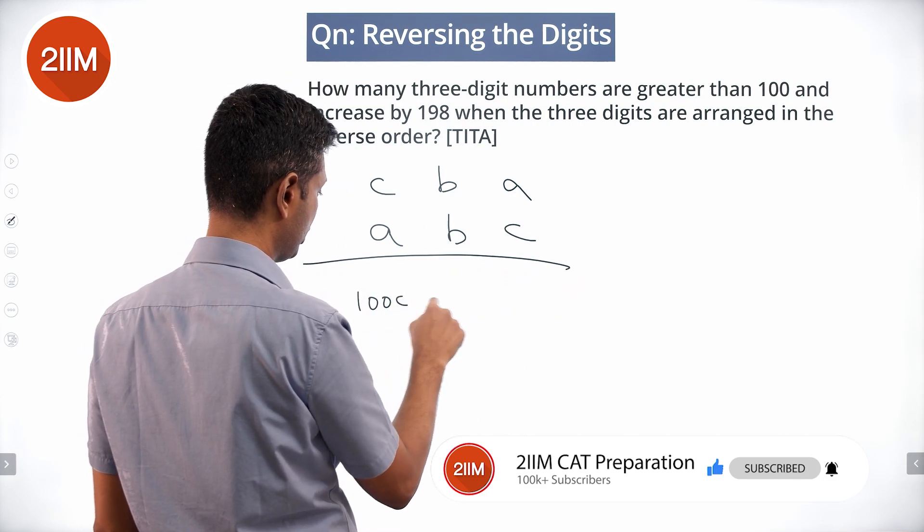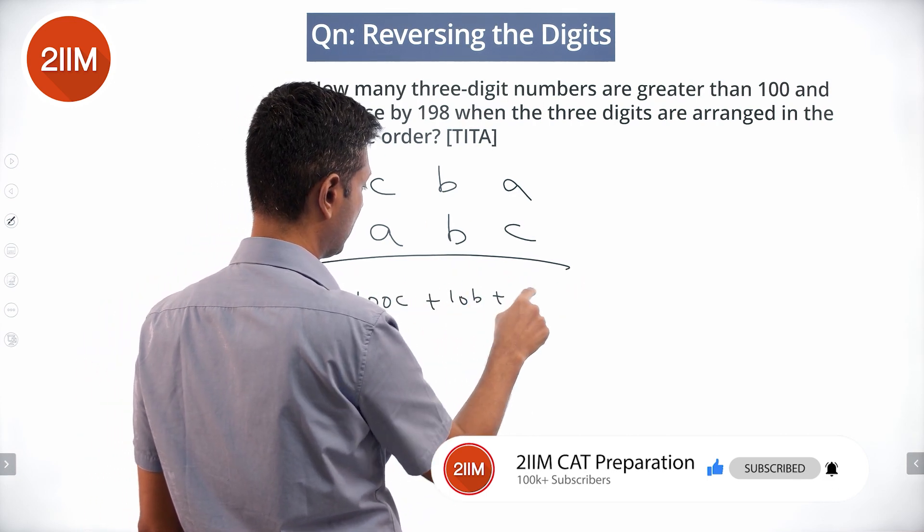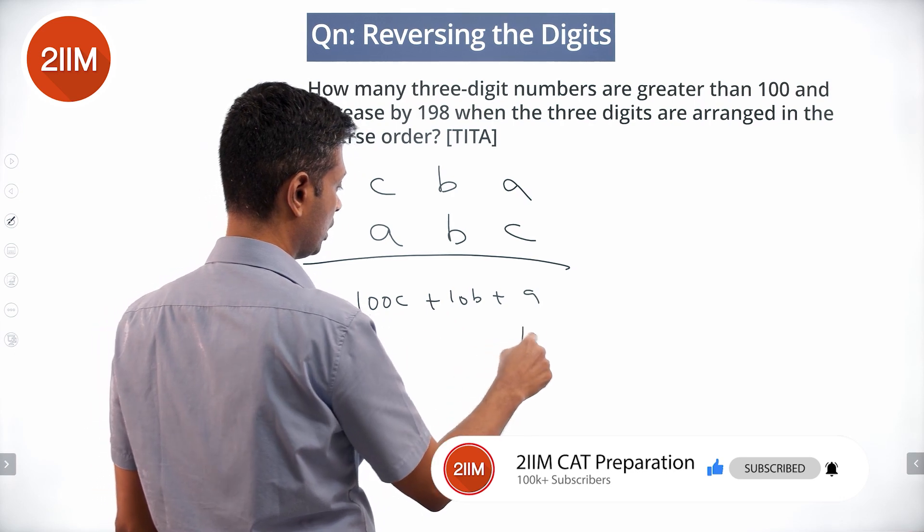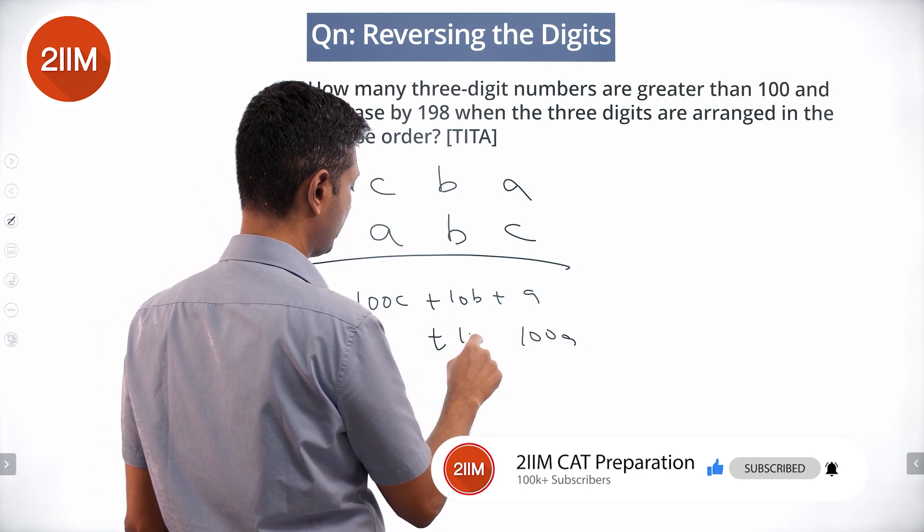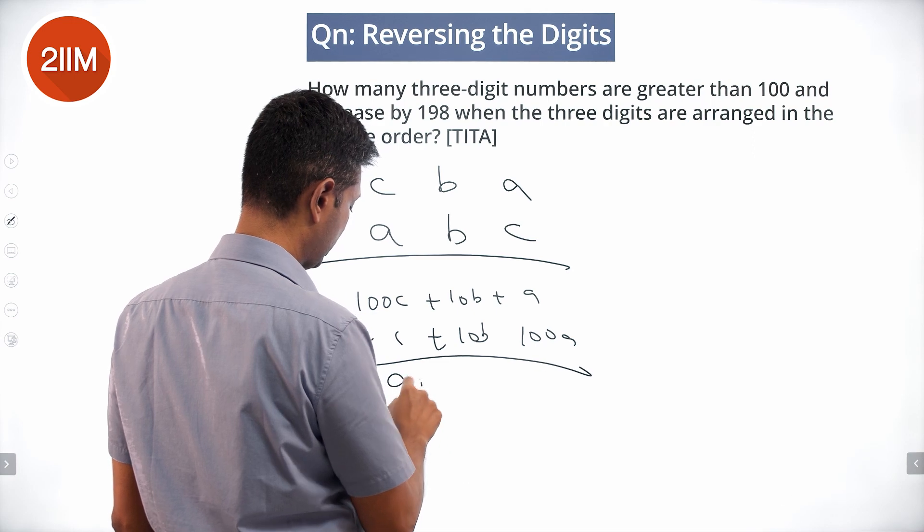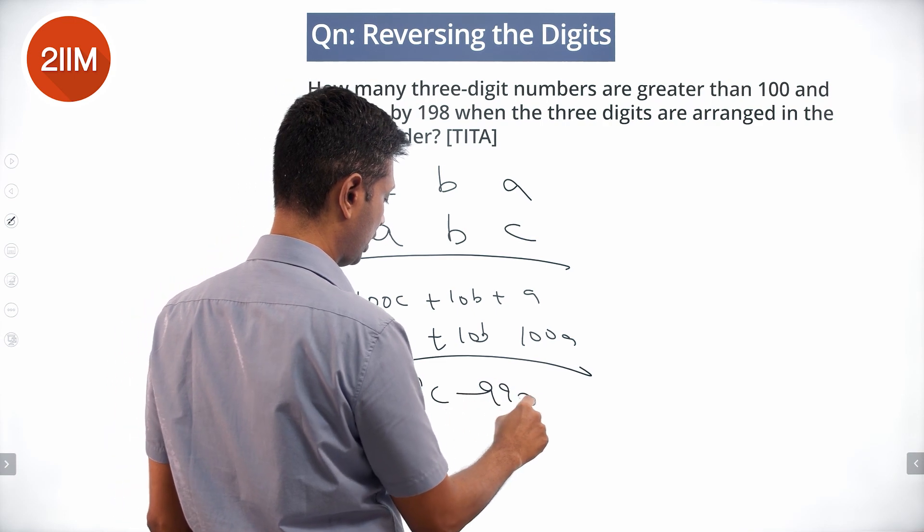We subtract 100C + 10B + A minus 100A + 10B + C. We get 99C minus 99A equals 198, or C minus A equals 2.